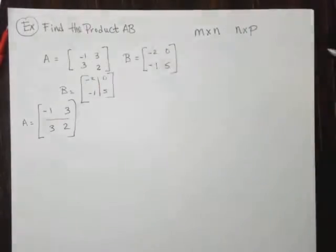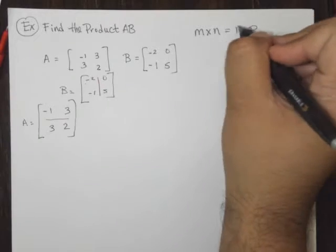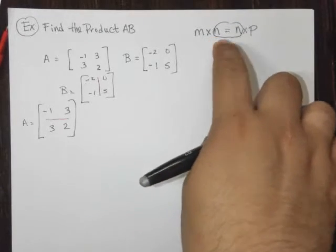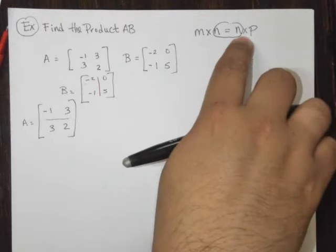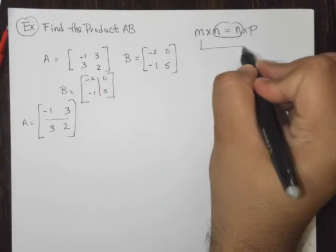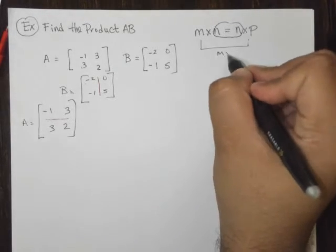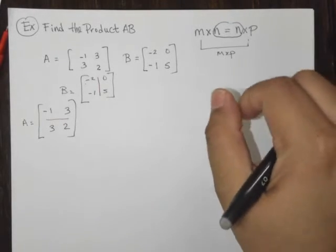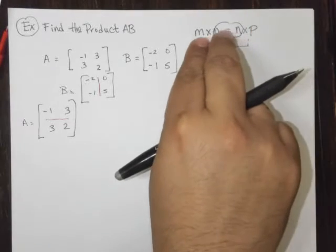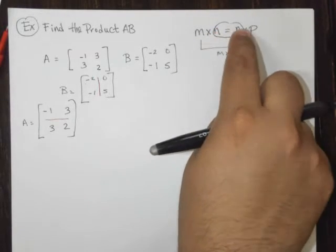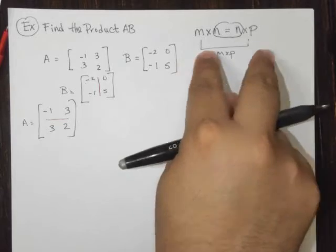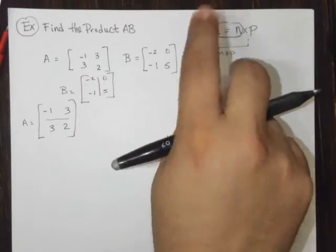In order for us to actually even multiply these, the numbers here, the number of columns of the first matrix must equal the number of rows of the second matrix. Now, the result, M by P, is your size of your new matrix. So those are the requirements. The number of columns has to equal the number of rows here. And then the outside dimensions are the dimensions of the new matrix.